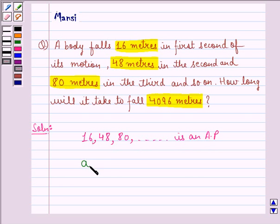Here A, that is the first term is 16. Common difference, that is D is equal to 48 minus 16, that is equal to 32.